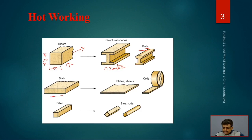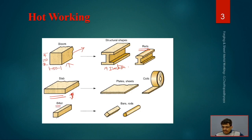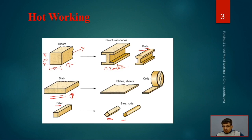The second one is slab. Slabs have typical dimensions where the length is more and the height is less. They have prescribed dimensions as per the handbook, and from the slab itself it will be converted to plates, sheets, and coils. The third one is billet. Billets have small cross-sections and will be converted into bars and rods. These three things - blooms, slabs, and billets - are the initial materials for hot working, with some cold working for certain shapes.